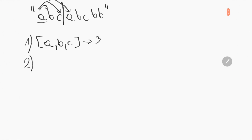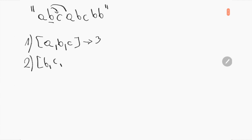Now we have to check all characters starting from the second character. Starting with 'b', the set builds as b, c, a, then 'b' is already in the set — the length is 3. We do that for all following characters: c, a, b, c, b, b. This pattern is pretty easy to understand.